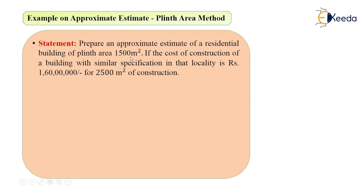You have to find out the approximate estimate. There is one existing building in that same locality whose cost is 1 crore 60 lakh for 2500 meter square. From that value we can find out the per meter square cost, and once we get the per meter square cost we can multiply it by the plinth area of our proposed structure, which is 1500 meter square.